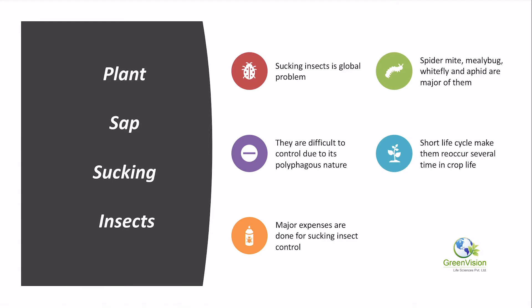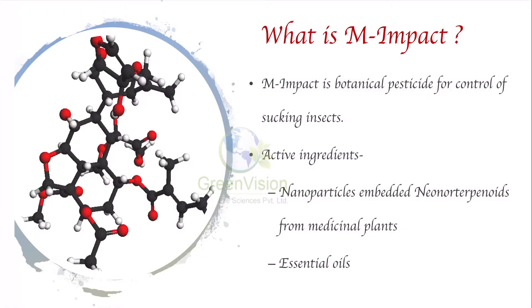Plants have sucking insects that are very dangerous. They suck sap from different plants, cause chlorosis, and cause heavy damage. There are many different types of sucking insects like spider mite, mealy bugs, whiteflies, aphids, jassids, and so on. These insects are very difficult to control because they are polyphagous in nature — they can feed on different types of plants and crops. They have a very short life cycle, so they reoccur again and again in a short time. Major expenses in agriculture are spent to control sucking insects — it is a global problem.